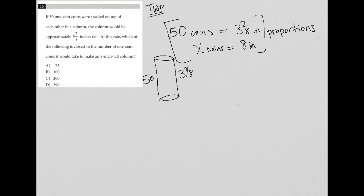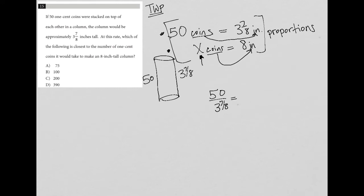Proportions are good whenever we have a relationship between two different units — in this case, coins and inches. We're provided with two different scenarios. Scenario one is 50 coins equals three and seven eighths inches, and in scenario two we have missing information — we don't know how many coins equals eight inches. So we set up a proportion: 50 over 3⅞ equals X coins over its corresponding height of eight inches.